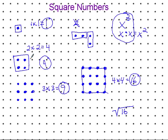So square numbers are numbers that if you draw a square array, however many total dots you have, that would be a square number.